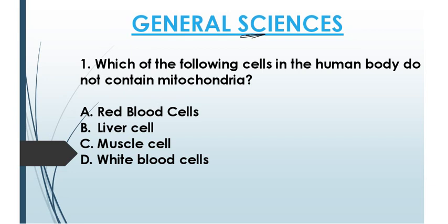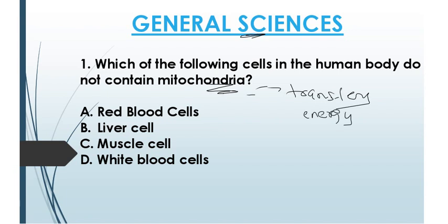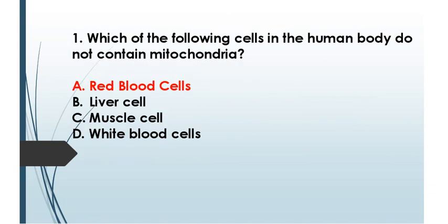Question number one is from biology: which of the following cells in the human body do not contain mitochondria? Mitochondria is a single-cell based organelle whose prominent role is to produce energy for the cell. The answer is option A: red blood cells.